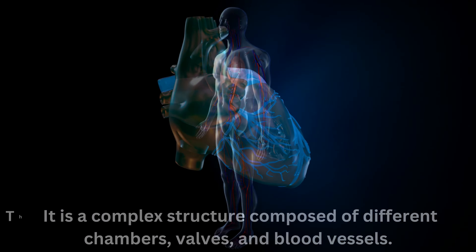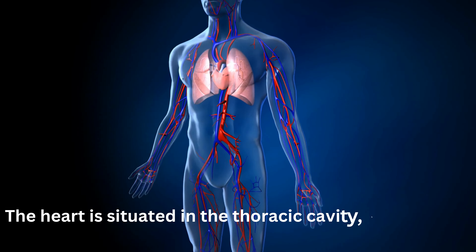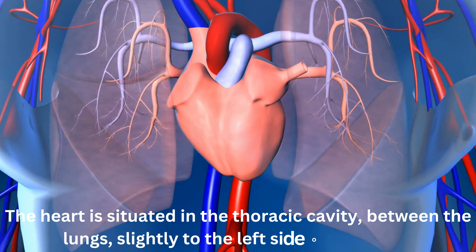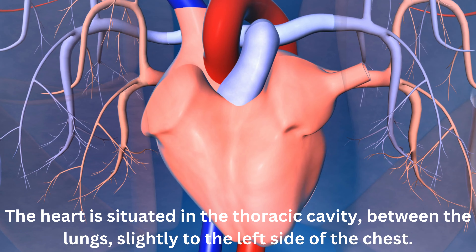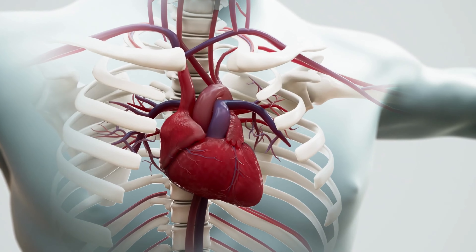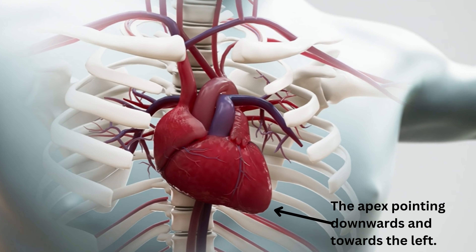The heart is situated in the thoracic cavity, between the lungs, slightly to the left side of the chest. It is positioned obliquely, with the apex pointing downwards and towards the left.